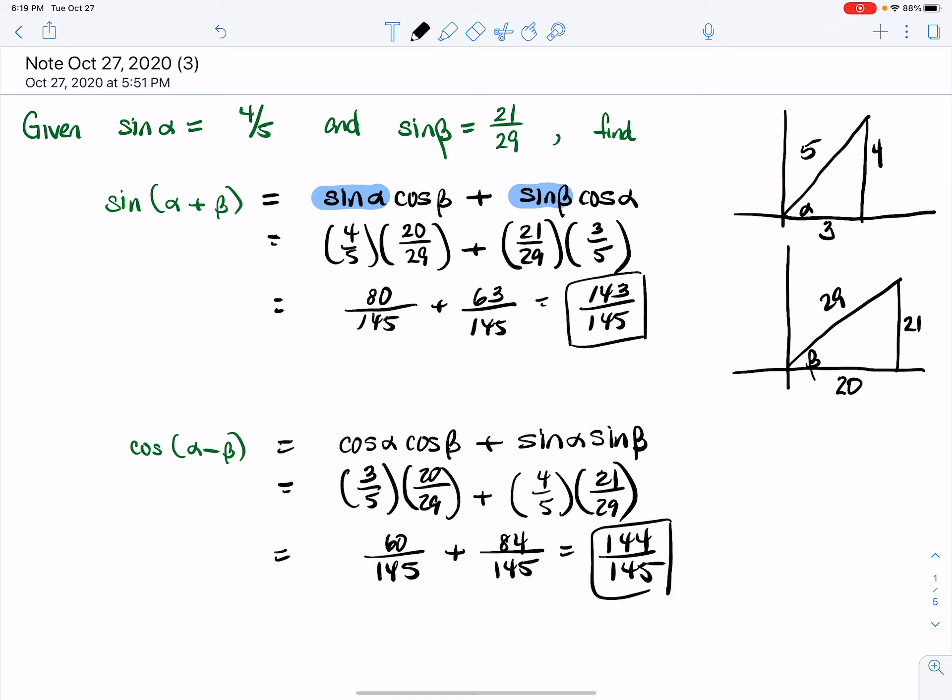So that is how to use the given information to find the sine and cosine of a sum or difference given some information. Naturally, we need to be given that information. So stay tuned for more. We're going to work more problems in the following video. Thanks so much for watching.